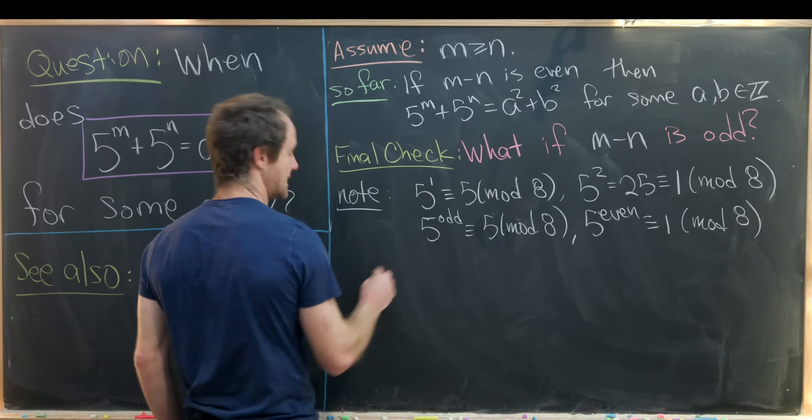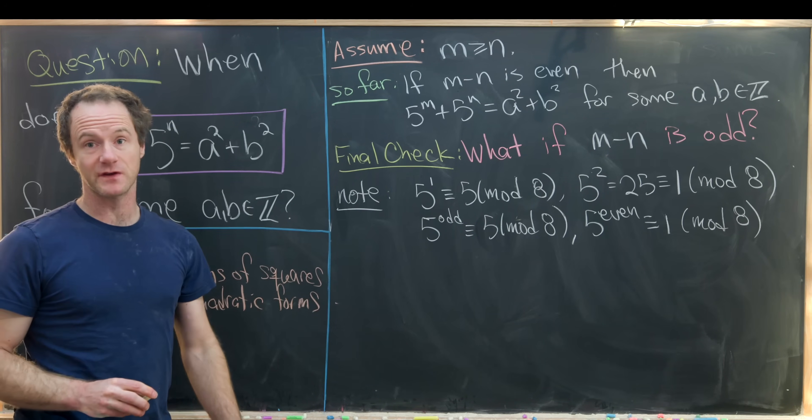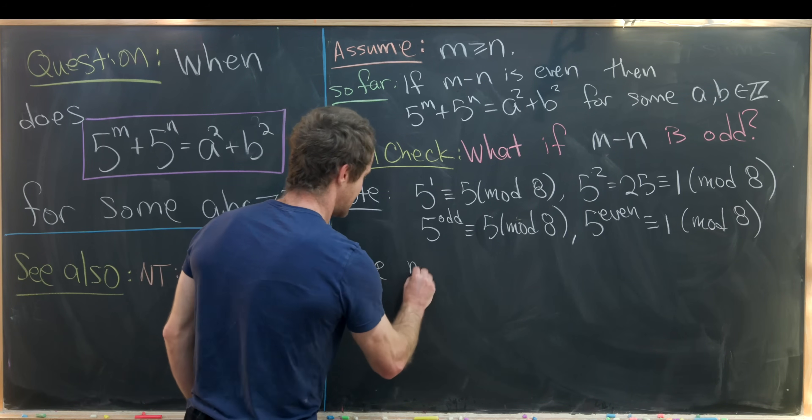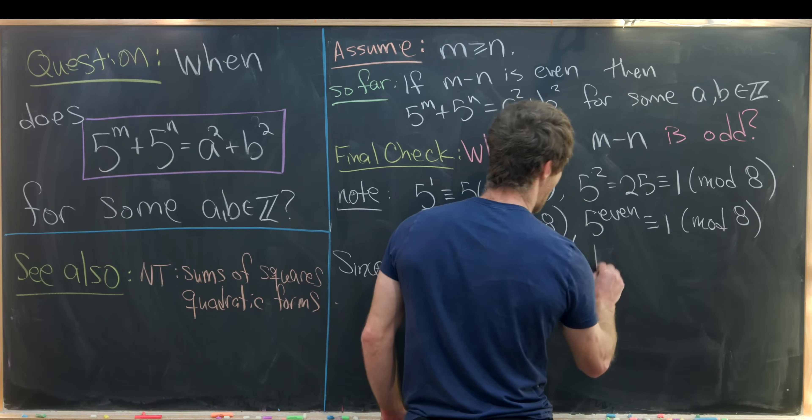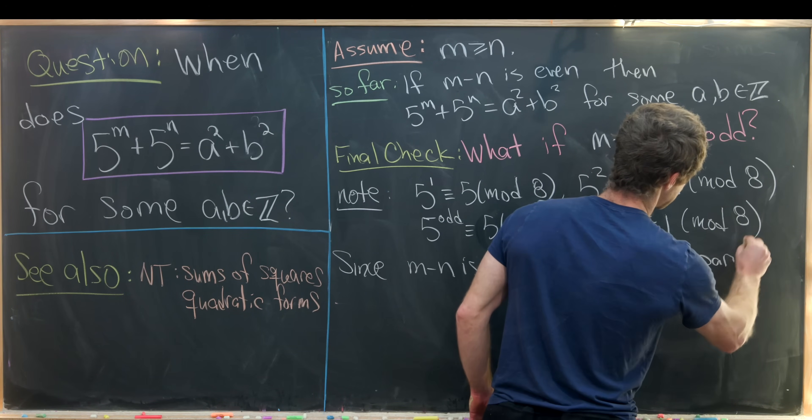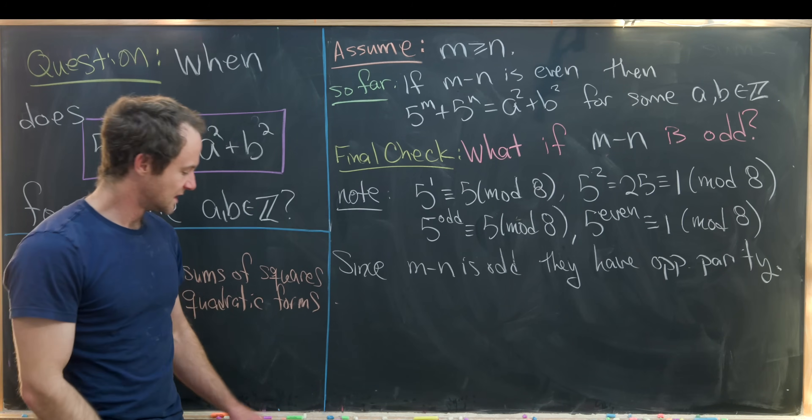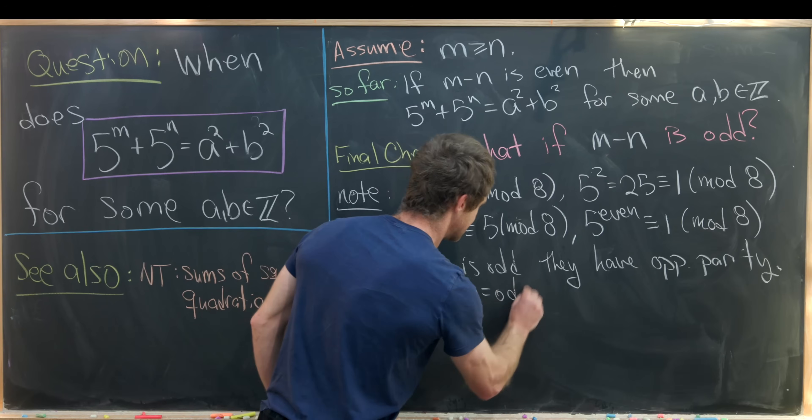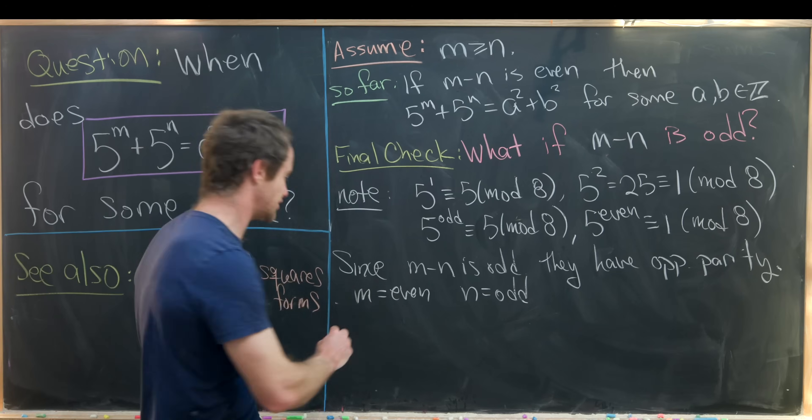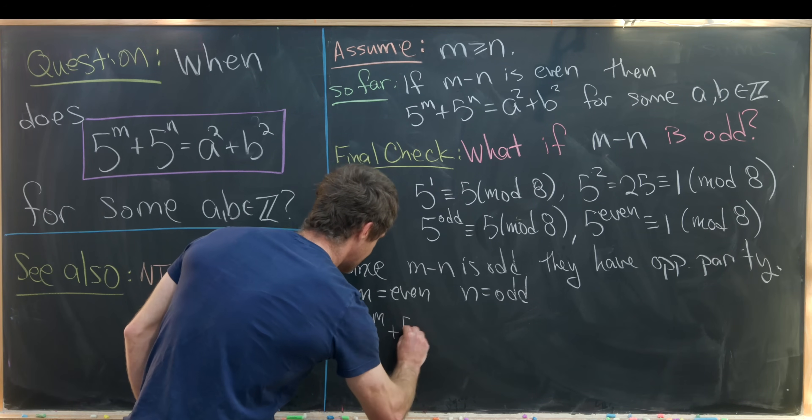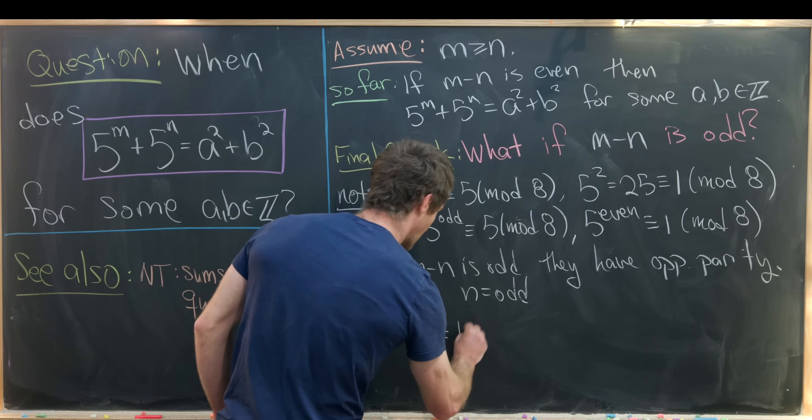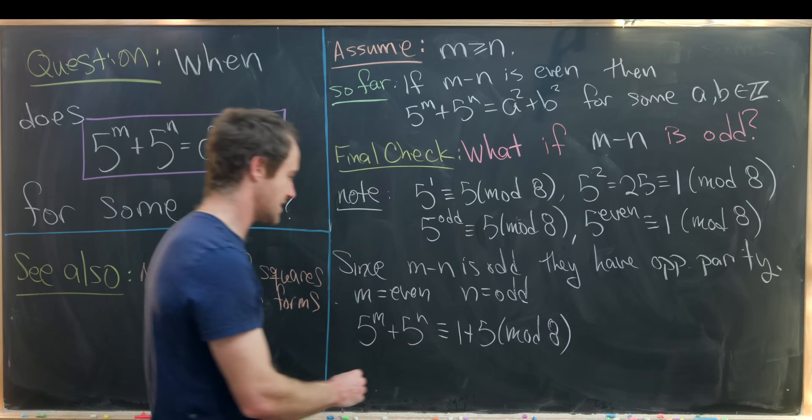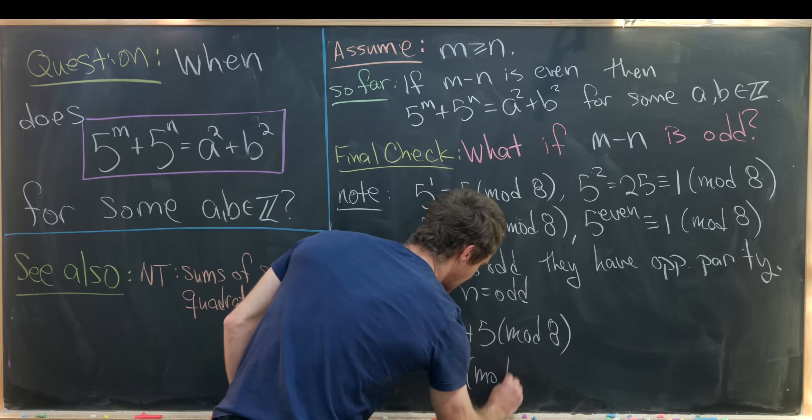But now if we know that m minus n is odd that means exactly one of those is even and exactly one of those is odd. So since m minus n is odd they have opposite parity. That's just a fancy way of saying that one is even and one is odd. So maybe without loss of generality let's assume that m is the even one and n is the odd one. But now we can take our object here 5 to the m plus 5 to the n and rewrite it as 1 plus 5 modulo 8 by this reduction that we just talked about. But let's notice that that is congruent to 6 modulo 8.